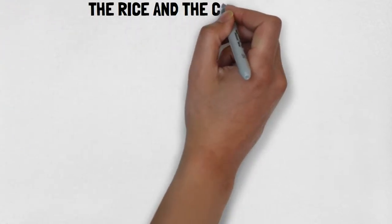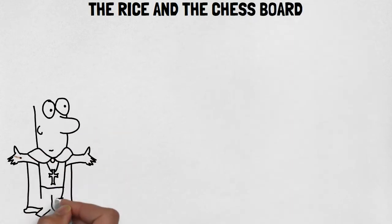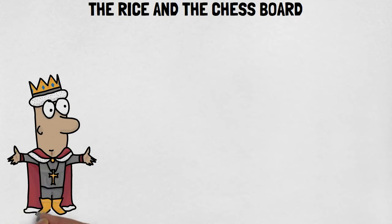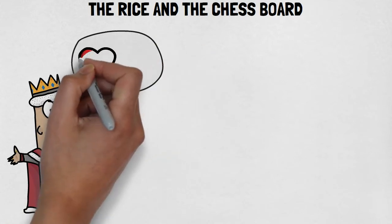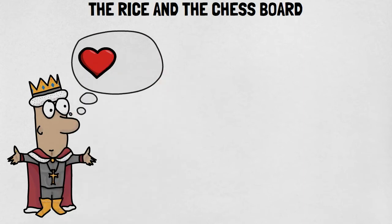The Rice and the Chess Board. There was once a king in India who was a big chess enthusiast and had the habit of challenging wise visitors to a game of chess. One day, a traveling sage was challenged by the king.